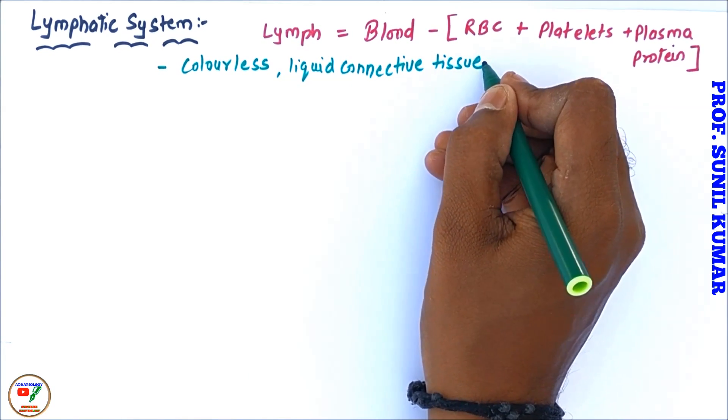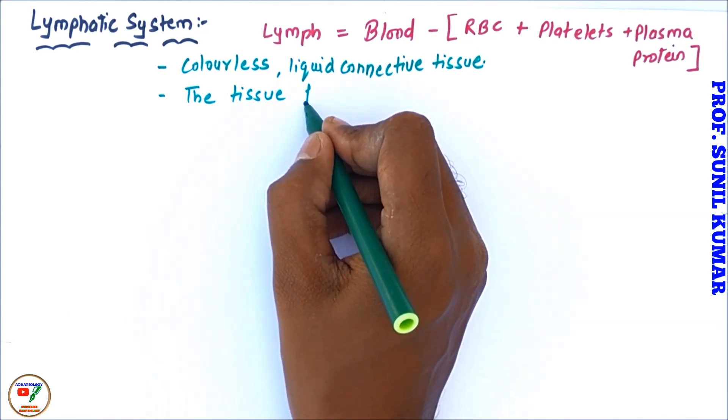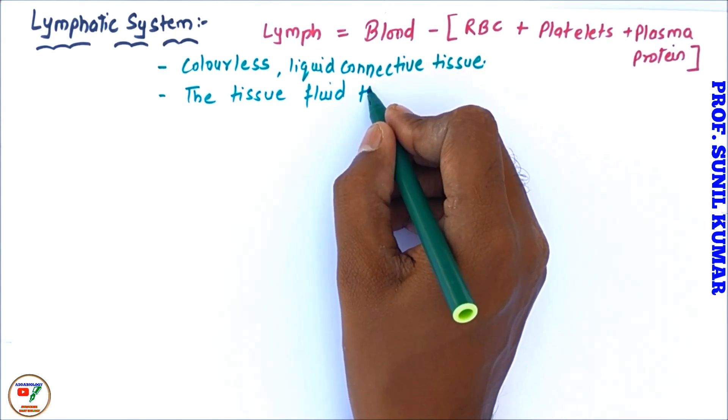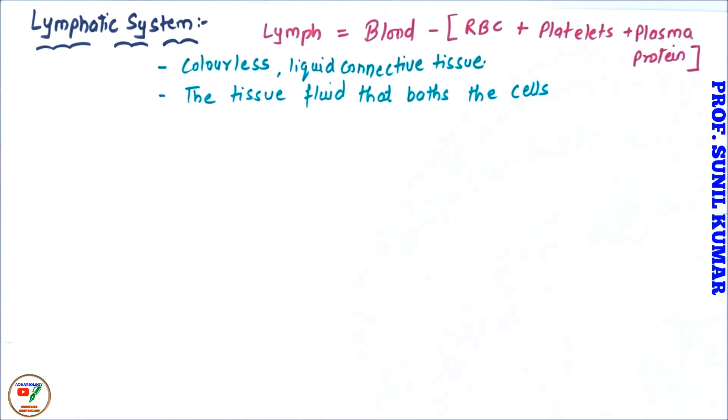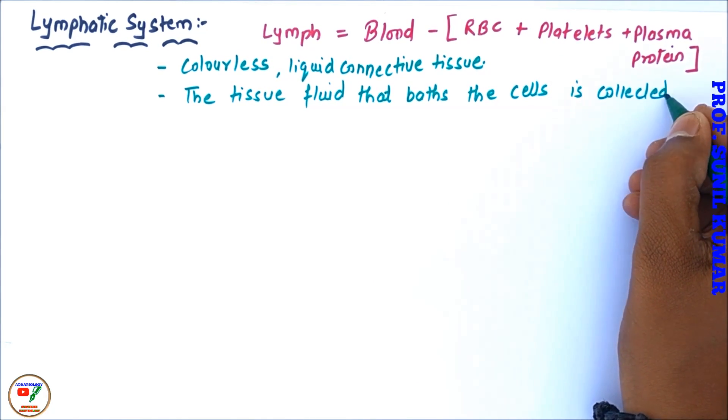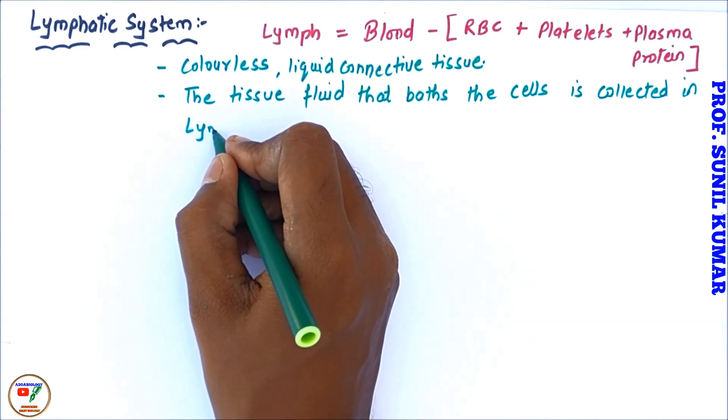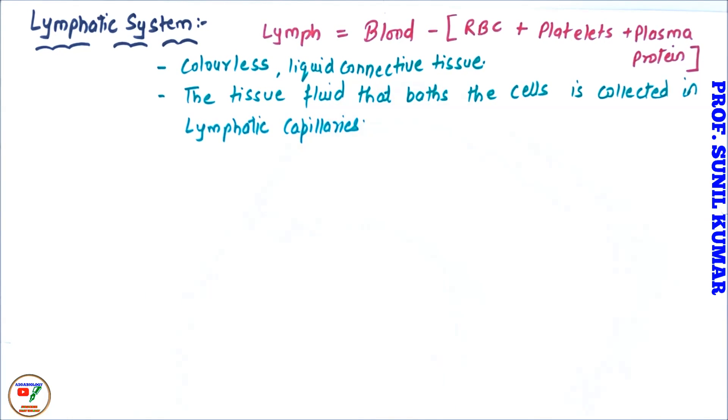Lymph is colorless liquid connective tissue. The tissue fluid that bathes the cells is collected in the lymphatic capillaries. It means that the tissue of a body is fully taking bath in a liquid and that liquid is called lymph. When you talk about lymph, it has carbon dioxide and metabolic waste.